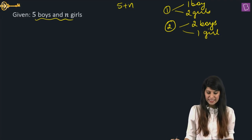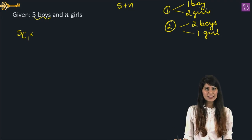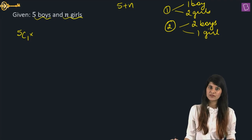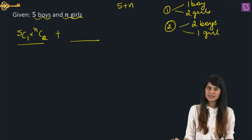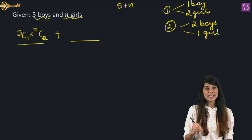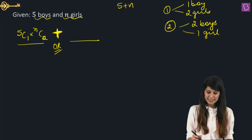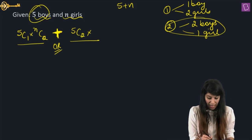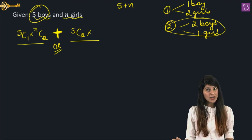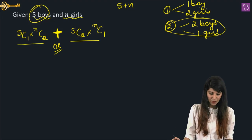First case says one boy, two girls. There are five boys, so we select one: 5C1. We need to select two girls out of N girls: NC2. This is the first case. Either first case or second case — that means a plus sign. Second case: two boys — 5C2 — multiplied by one girl — NC1.